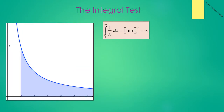Shown on the screen is the graph of y equals 1 over x. If we look at the integral from 1 to infinity of 1 over x dx, this represents the area under the curve from 1 to infinity. By the fundamental theorem of calculus, this equals the natural log of x evaluated from 1 to infinity, which is infinity, meaning this integral is divergent and the area is infinite.